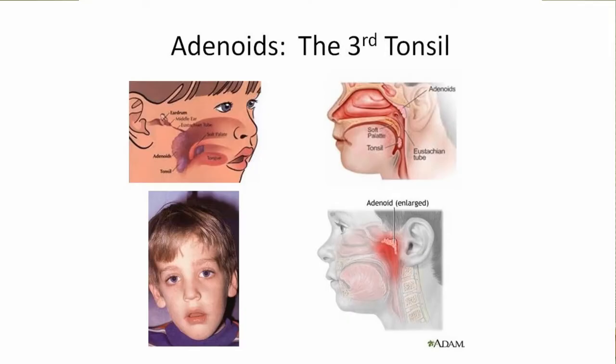Let's talk about adenoids. I tell parents to think of the adenoids as kind of the third tonsil. Everyone can see their tonsils by opening their mouth, but you can't see the adenoids, so I have to convince parents that it's there. Kids with severe nasal obstruction can develop what we call adenoid facies — a long, thin face from chronic mouth breathing. That chronic mouth breathing in kids with extreme nasal obstruction actually changes some of the facial bone growth, resulting in an elongated face. Nasal congestion also causes circles around the eyes as blood backs up.